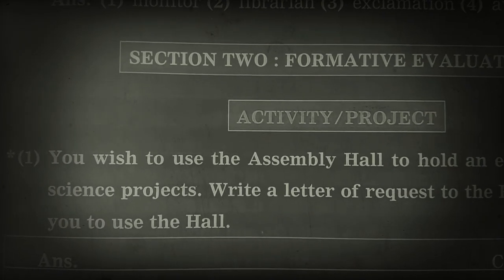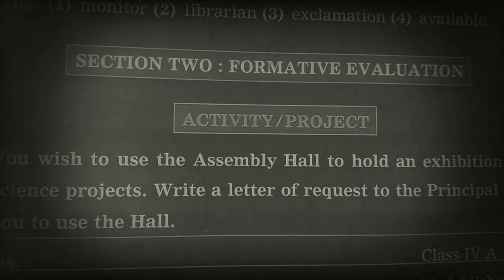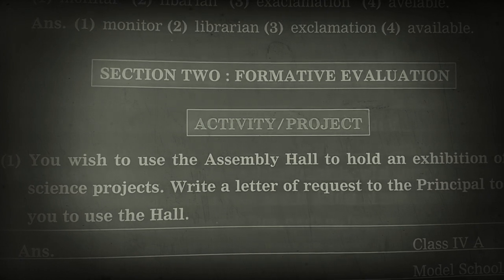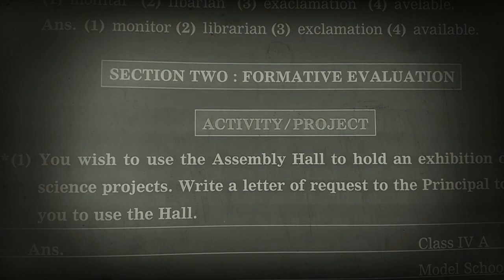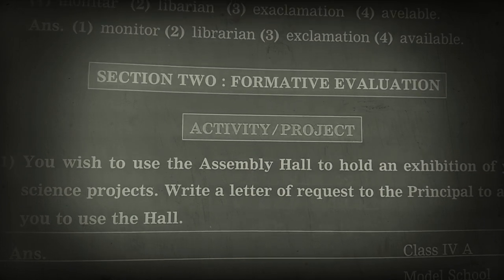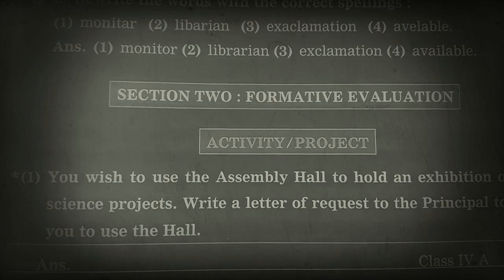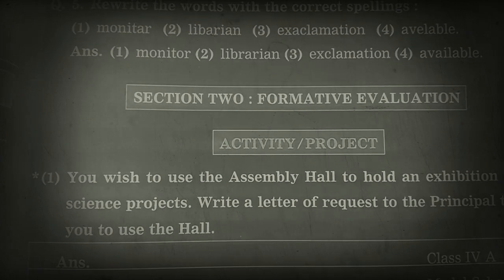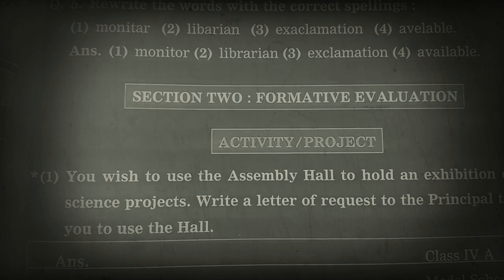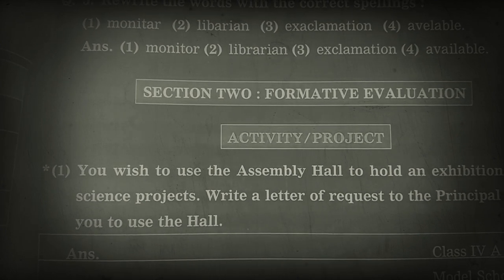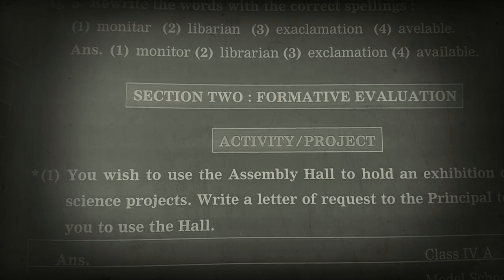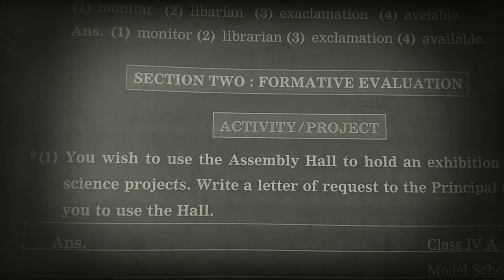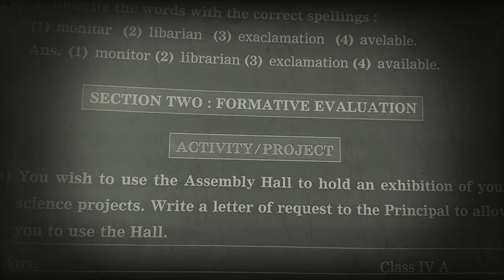Here is one activity for you. You wish to use the assembly hall to hold an exhibition of your science project. Aapko science project ka exhibition rakhna hai school ki assembly hall mein. Write a letter of request to the principal to allow you to use the hall. You have to write a formal letter to the principal from your class. Subject kis bare mein hoga? You want to use the assembly hall for the science project. You have to complete this.